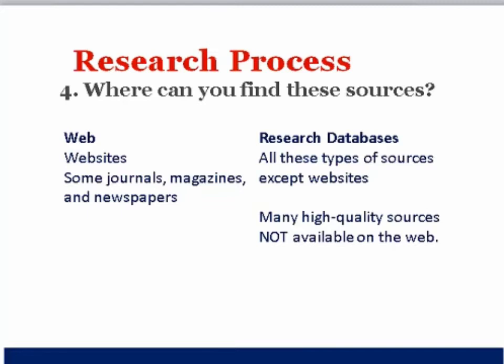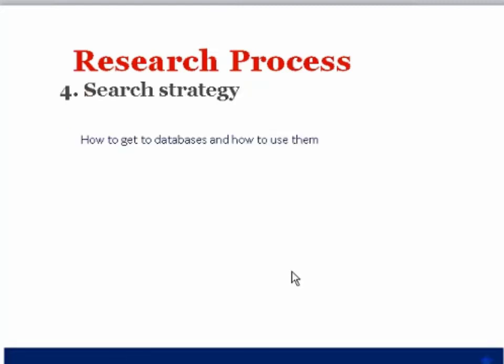So where do you find these sources? We'll use the example of starting with magazine articles for background, then a book, then scholarly journal articles. On the web you find websites, and an increasing number of journals, magazines, and newspapers publish on the web, including scholarly journals — you need to verify they're peer-reviewed by checking the 'about the journal' section. The research databases we have contain many sources not available on the web, so if you're only using Google for your research, you're missing a lot of really good sources.